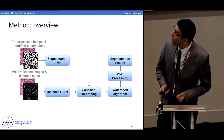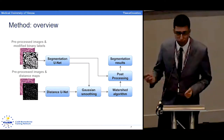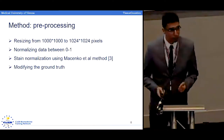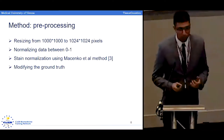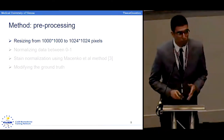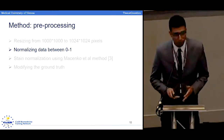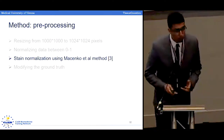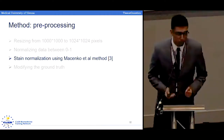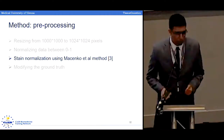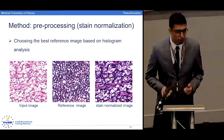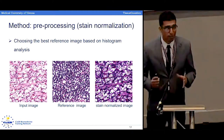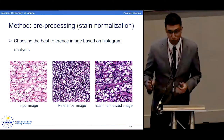Here is the overview of our method, which has different parts. Starting with pre-processing, we apply four pre-processing steps on the images. First, we resize the images from 1000 pixels to 1024 pixels. Then we normalize the intensity values between 0 and 1. Then we apply a stain normalization technique proposed by Macenko et al. in 2009. What we tried to do in this step was to match the staining separation vectors of the input image and reference image.